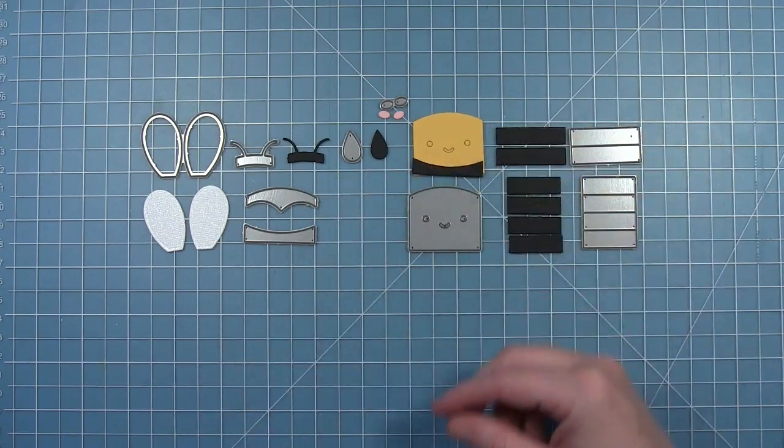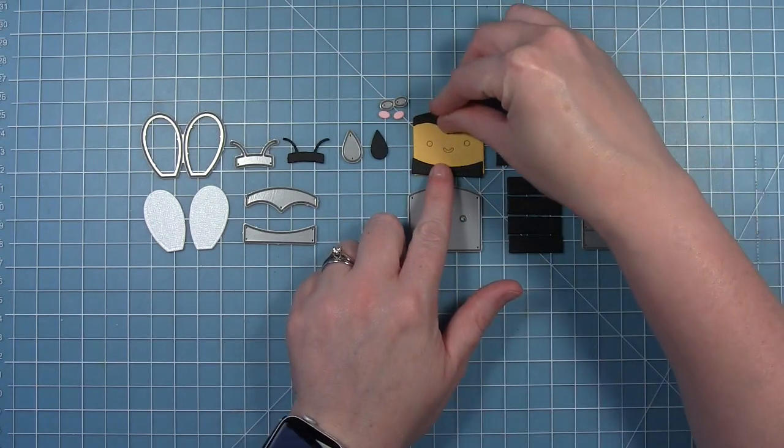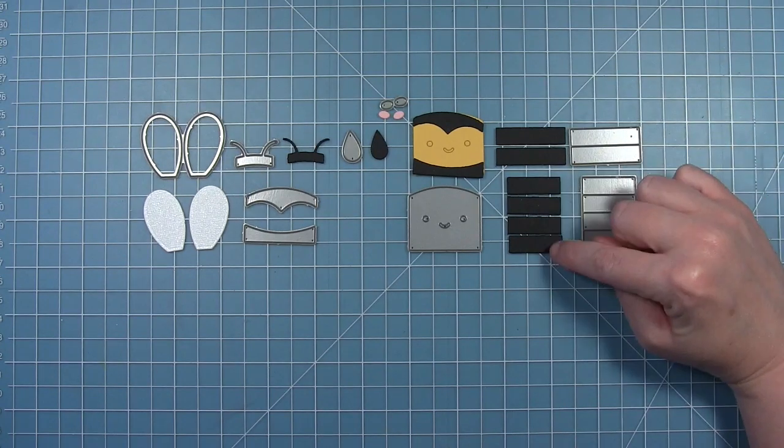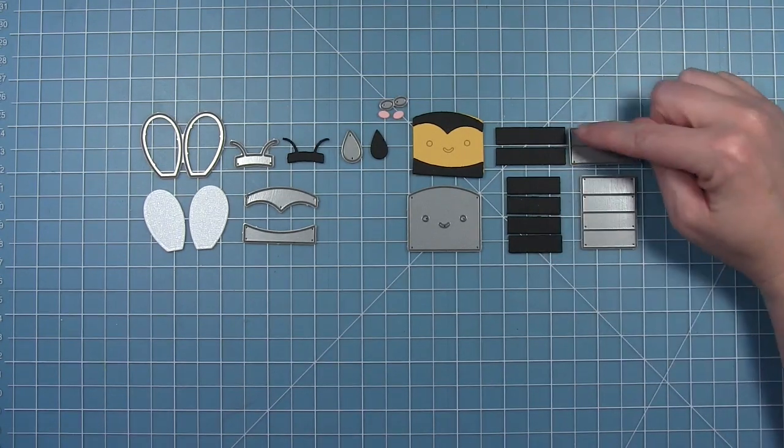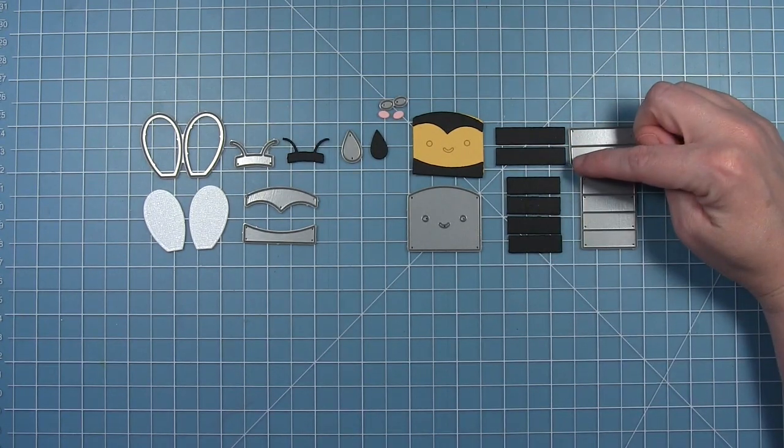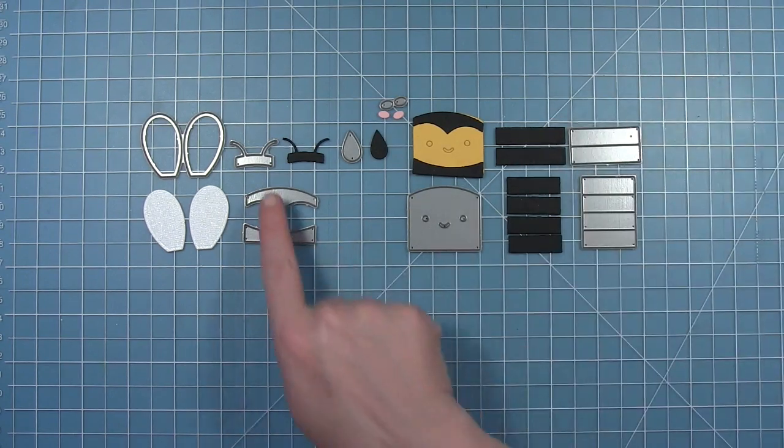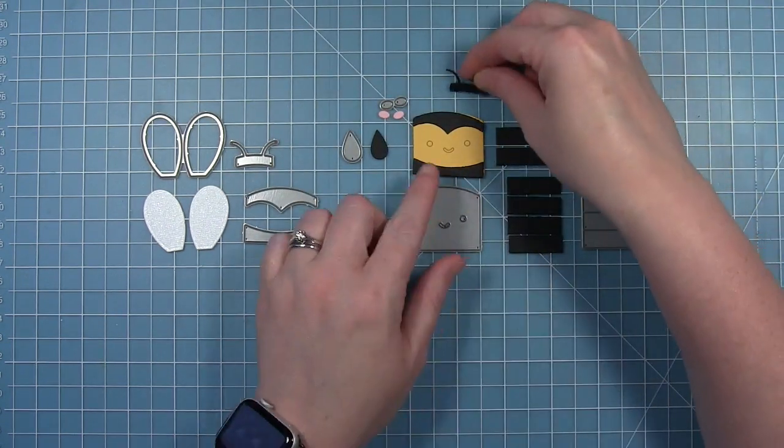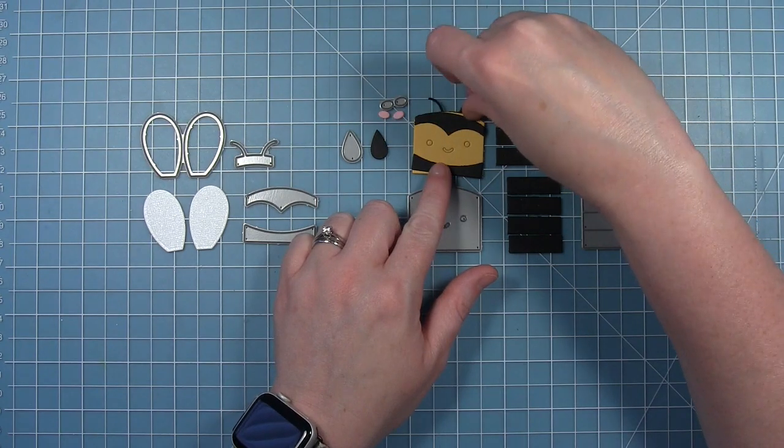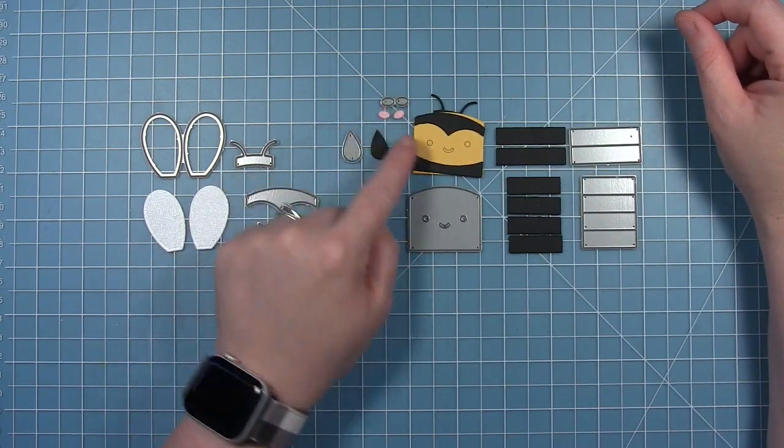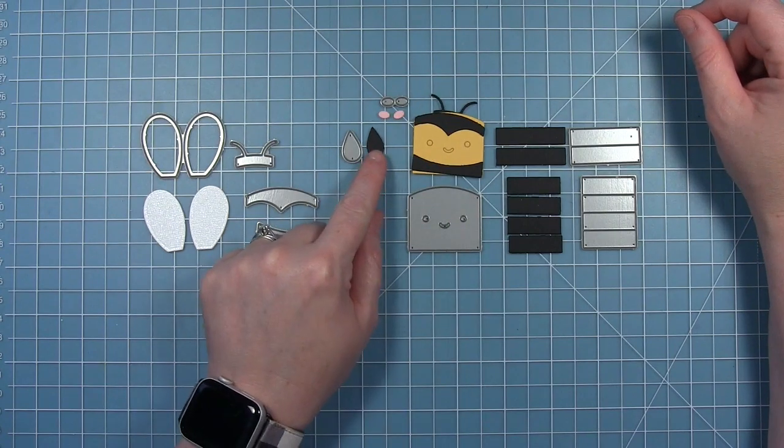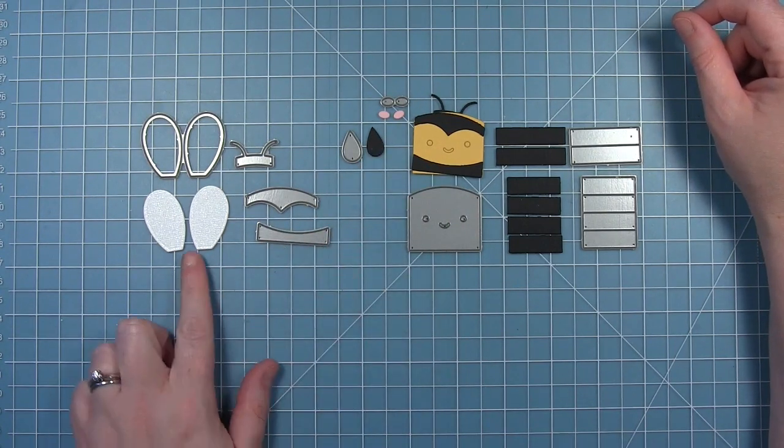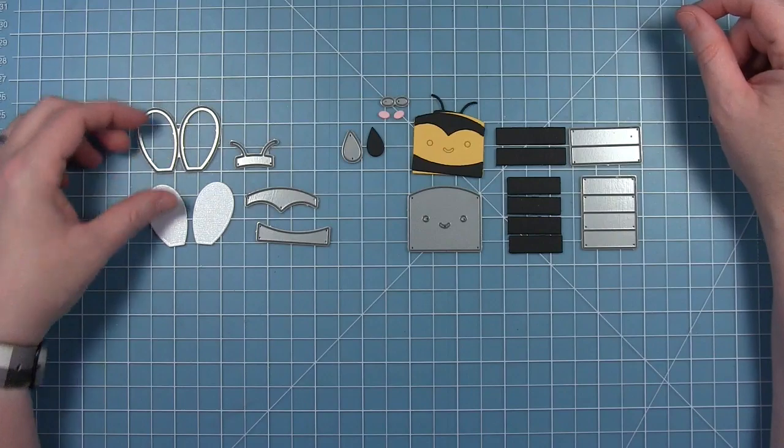It also cuts some stripes for the sides of the box and the top—one cuts four for two sides and two for the top. It also cuts the little antenna that you layer behind, a little stinger, some little rosy cheeks to go on the face, and of course the wings of the bee.